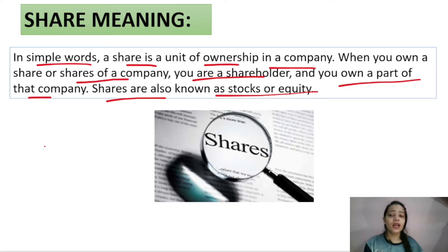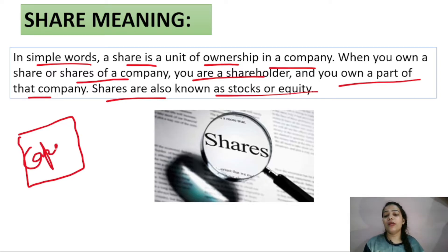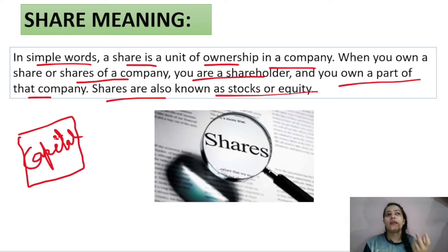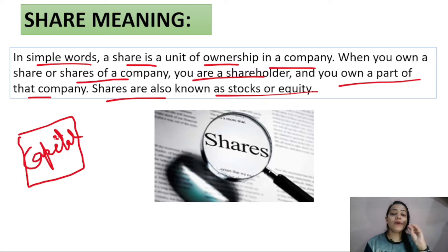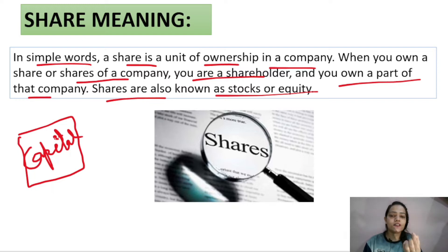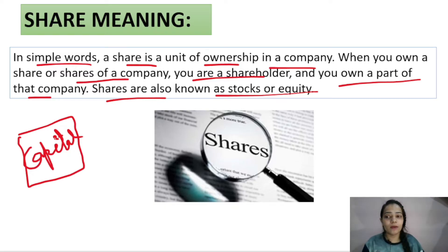When a public company is formed, it needs money. So it goes to the public, inviting them to come and invest — this is how it raises capital by issuing shares and offering its securities to the public. For example, if one share is priced at 100 rupees and someone buys 10 shares, they spend 1,000 rupees. That 1,000 rupees represents a small portion of the company's total capital, making that person an owner of that portion.